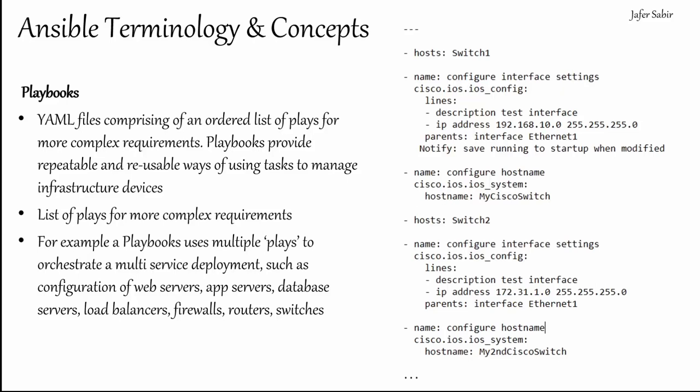All YAML files, regardless of their association with Ansible, tend to begin with three dashes and end with dots — indicating the start and end of a document. White spacing is important in YAML just as it is in Python. To summarize: the playbook is a list of plays, with handlers, collections and everything linked in. You run the playbook and that's how you manage your infrastructure devices.